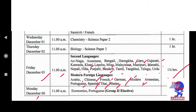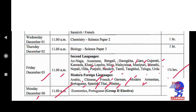Whoever has opted for a second language — their exam is at 11 a.m. on 3rd December. The subject is Economics, or Portuguese, which is also for Group 2 Elective. So whoever has opted for Group 2 Elective — Economics or Portuguese — their last exam is on December 6th. Duration is 1 hour.